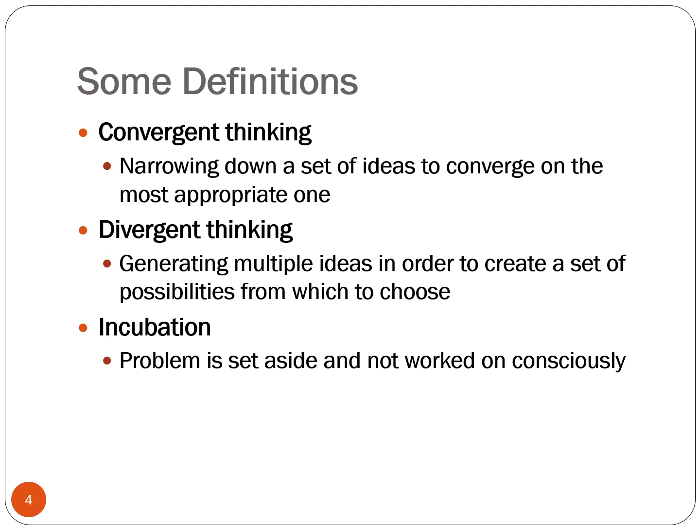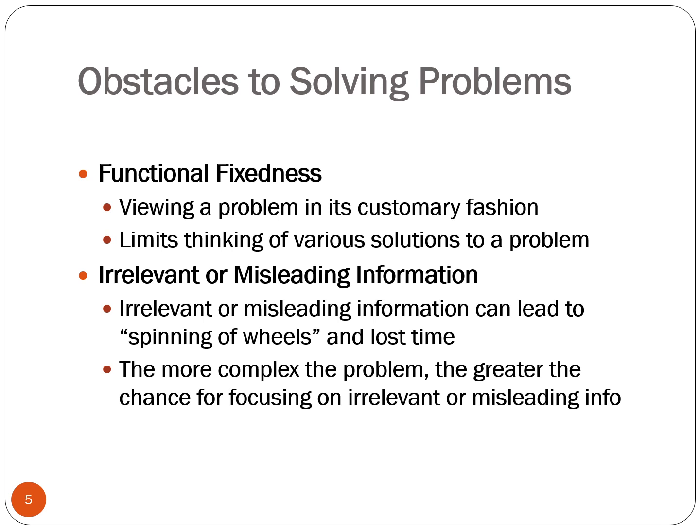These are a few of our cognitive problem-solving tools, but there are also some obstacles to problem-solving that we must be aware of. The first obstacle is functional fixedness. This occurs when we depend on seeing a problem in its customary fashion. For instance, you see a loose screw but don't have a screwdriver to tighten it. You might reach in your pocket and find a coin that can be used to tighten the screw. If you only thought a screwdriver would work, you wouldn't have been innovative enough to realize a coin would do the trick — you would have been a victim of functional fixedness, which limits thinking of various ways to solve a problem.